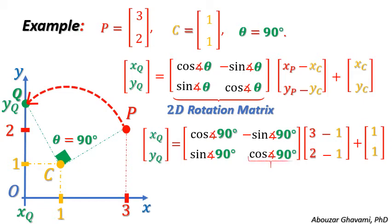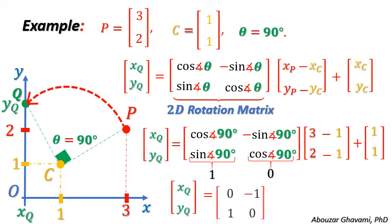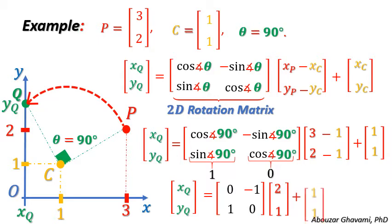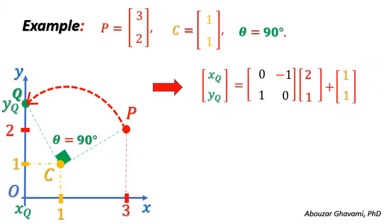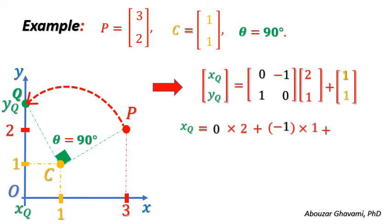Substituting cosine of 90 degrees with 0 and sine of 90 degrees with 1, we have the coordinates of rotated point Q equal to the matrix with elements 0, negative 1, 1, and 0, times the vector with elements 2 and 1, plus the vector with elements 1 and 1. Taking the matrix multiplication and vector summation, we have X of point Q equal to 0 times 2, plus negative 1 times 1, plus 1, that is equal to 0.